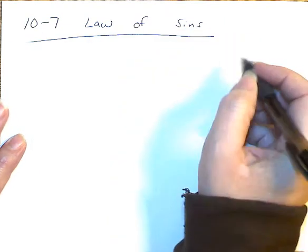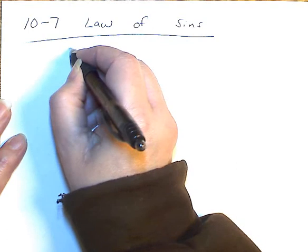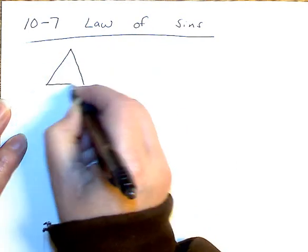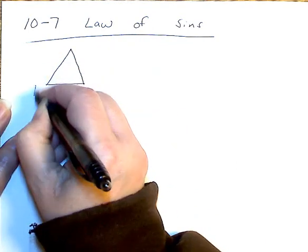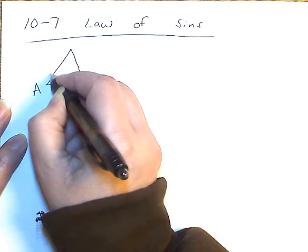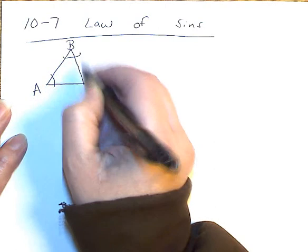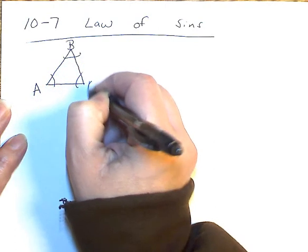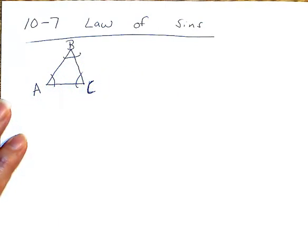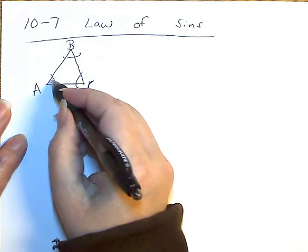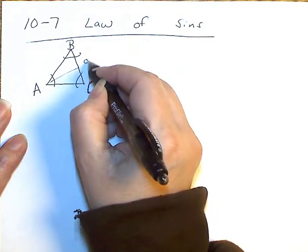So the first thing is you start with a triangle, and always the angles are represented by capital letters. So we have A, B, and C. Across from each one, directly straight across, is the side. So this is A, and it's represented by a little a.